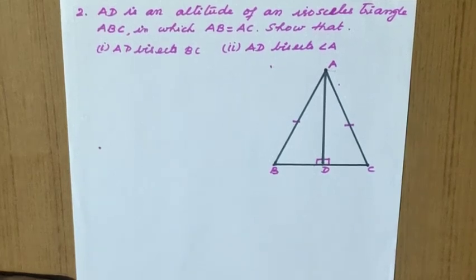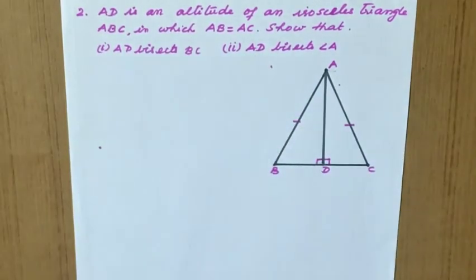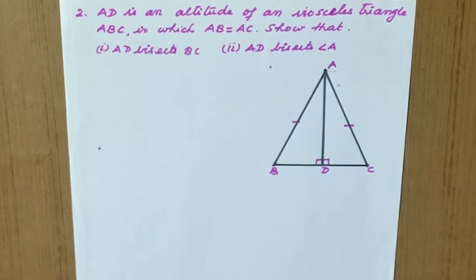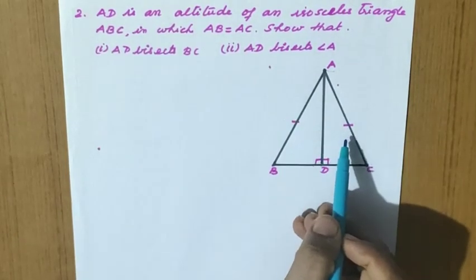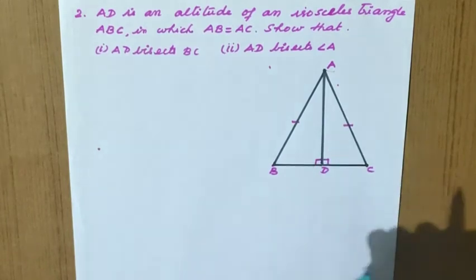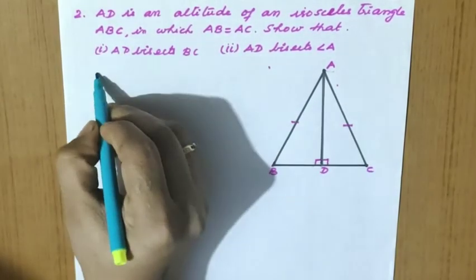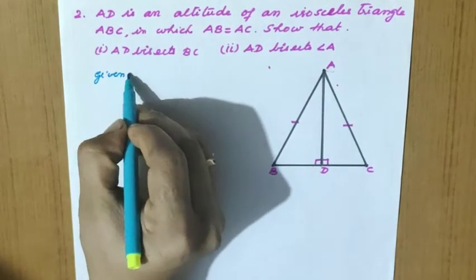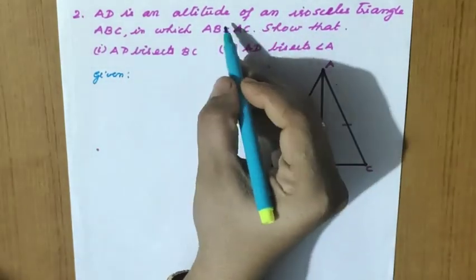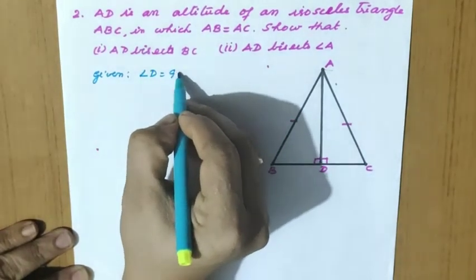Good morning children. We are continuing Exercise 7.3 from Chapter 7 Triangles, Question 2. AD is an altitude of an isosceles triangle ABC in which AB equals AC. What is given: the isosceles triangle, AD is an altitude, so angle D equals 90 degrees.